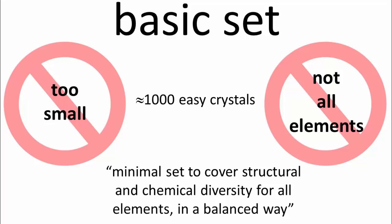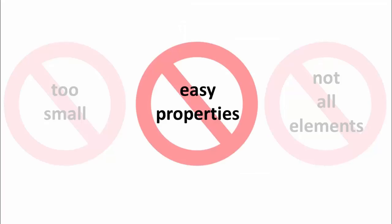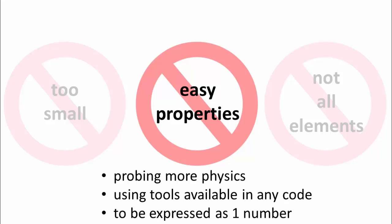These three parts together form what we call this basic set — about 1,000 crystals that should run overnight on a typical computing system. We expect this is a minimal set that covers structural and chemical diversity in a rather balanced way for every element. That should be your ideal testing ground for pseudopotential generation and for maintaining the integrity of an existing code. It still doesn't solve the problem of having studied only easy properties — so what would be the next properties to consider? We want more physics than just energy versus volume, using tools available in every code, expressible as one number.